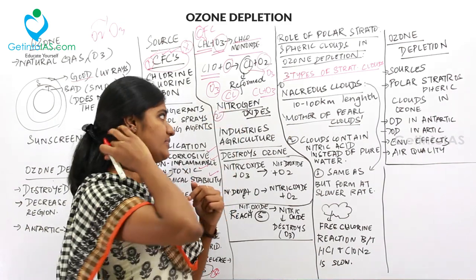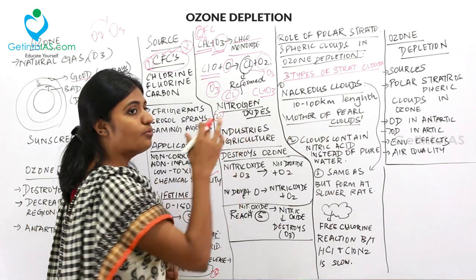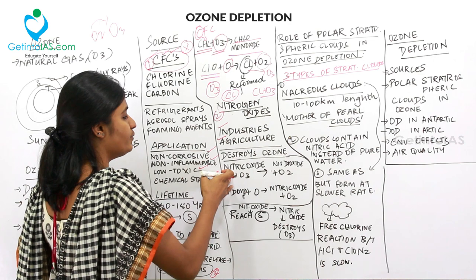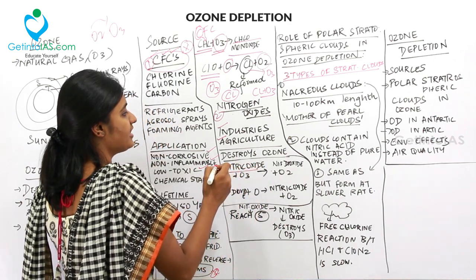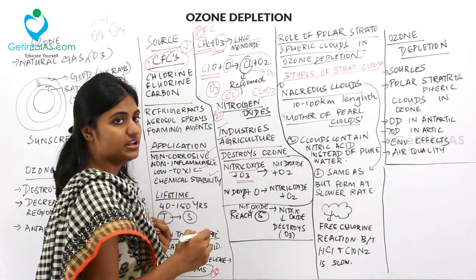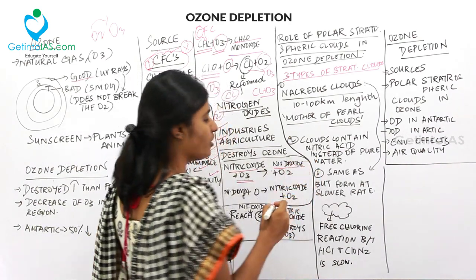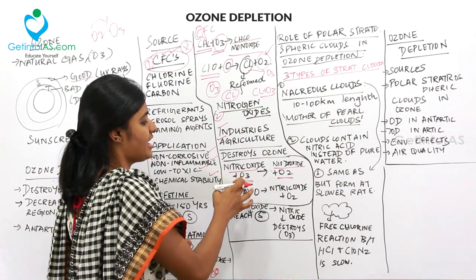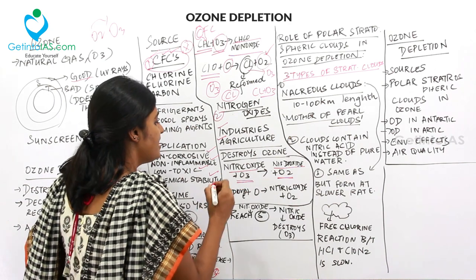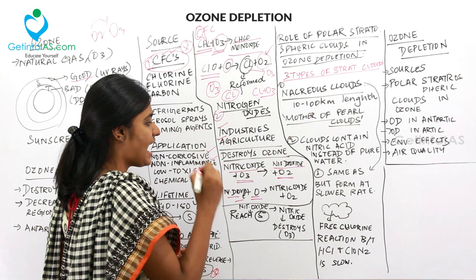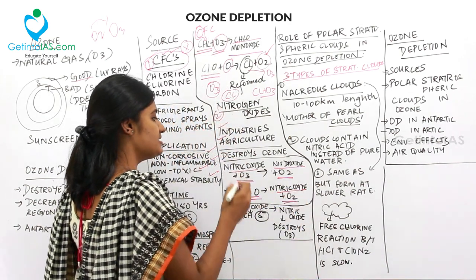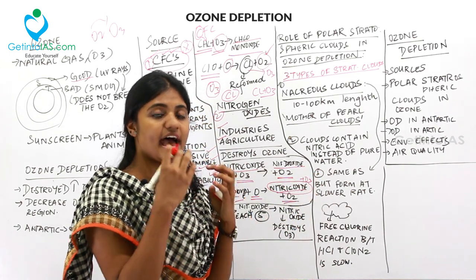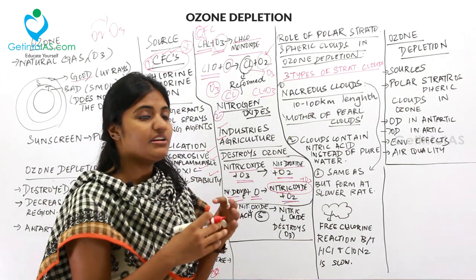The second source is nitrogen oxide. Nitrogen oxides are mostly released from industries and agriculture, and they destroy the ozone layer. Nitric oxide reacts with ozone to form nitrogen dioxide and an oxygen molecule. Then nitrogen dioxide reacts with monoxide to release nitric oxide and O2. This process repeats — nitric oxide continually reacts with ozone — and the ozone is depleted.